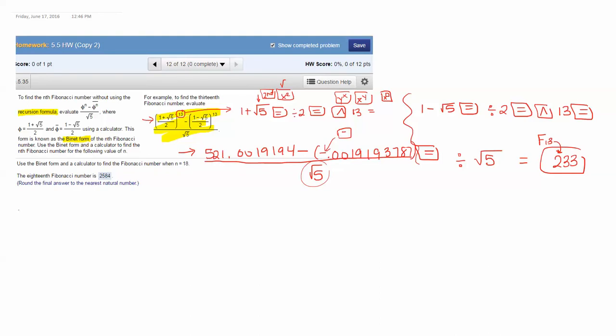Now on this one we want to use the Binet form in the calculator to find the Fibonacci number when n is 18. We just want to find the 18th number in the list using this formula. The formula would be 1 plus the square root of 5 divided by 2 to the 18th power minus 1 minus the square root of 5 divided by 2 raised to the 18th power and that whole thing is divided by the square root of 5.